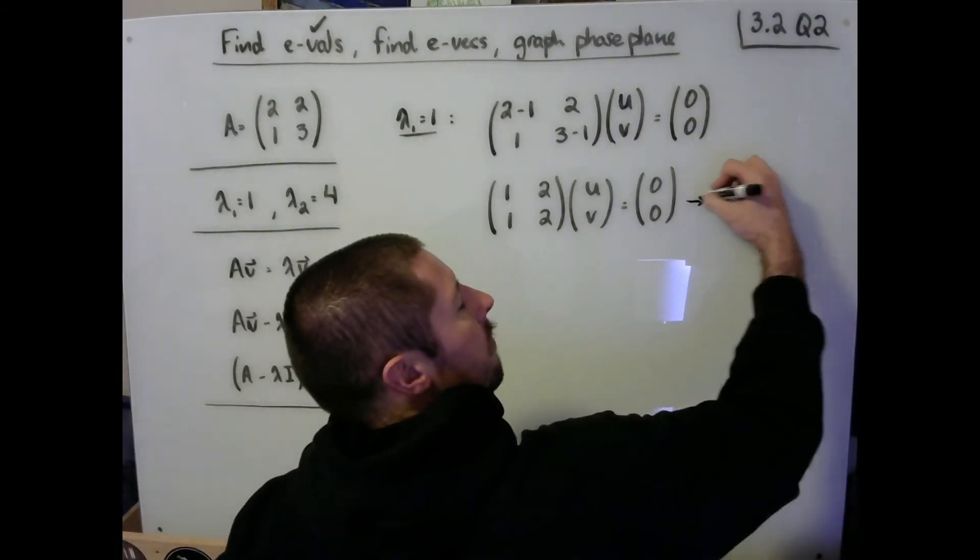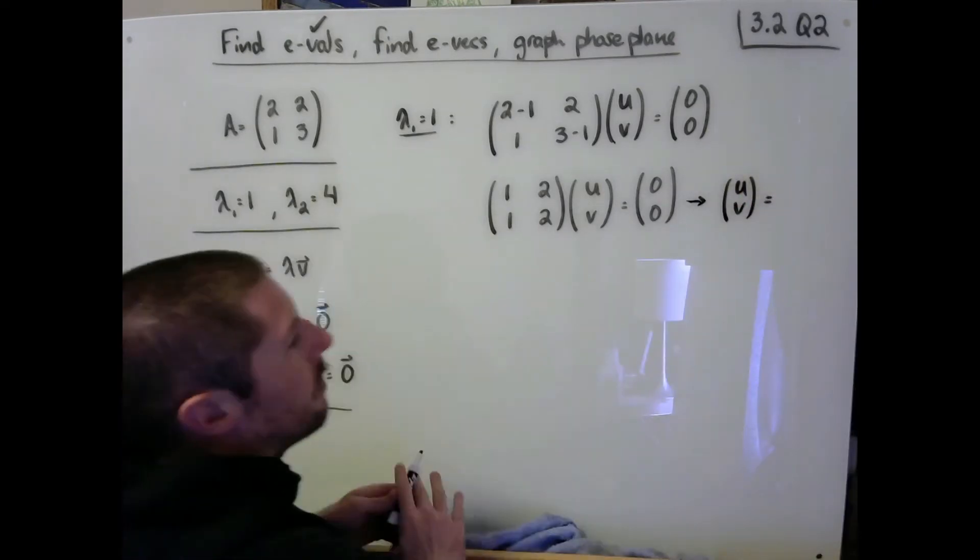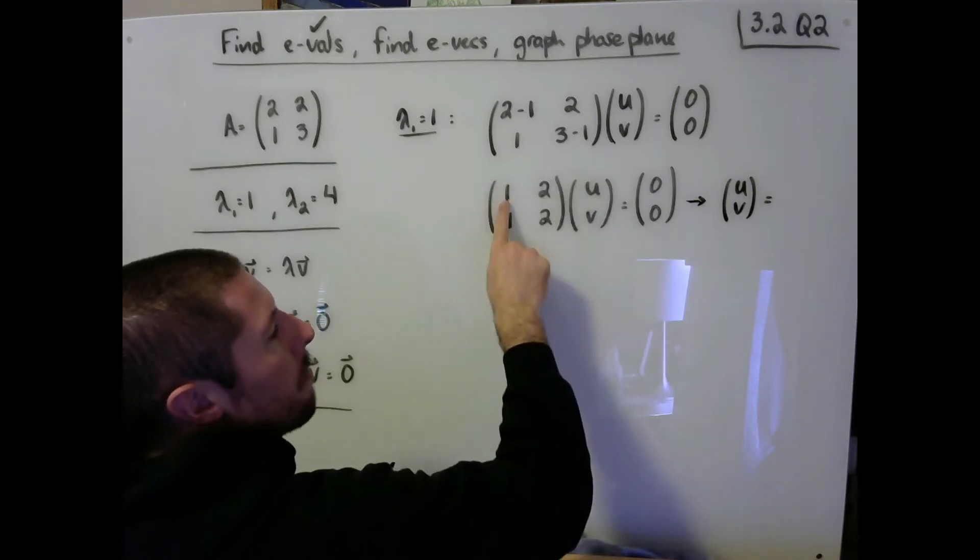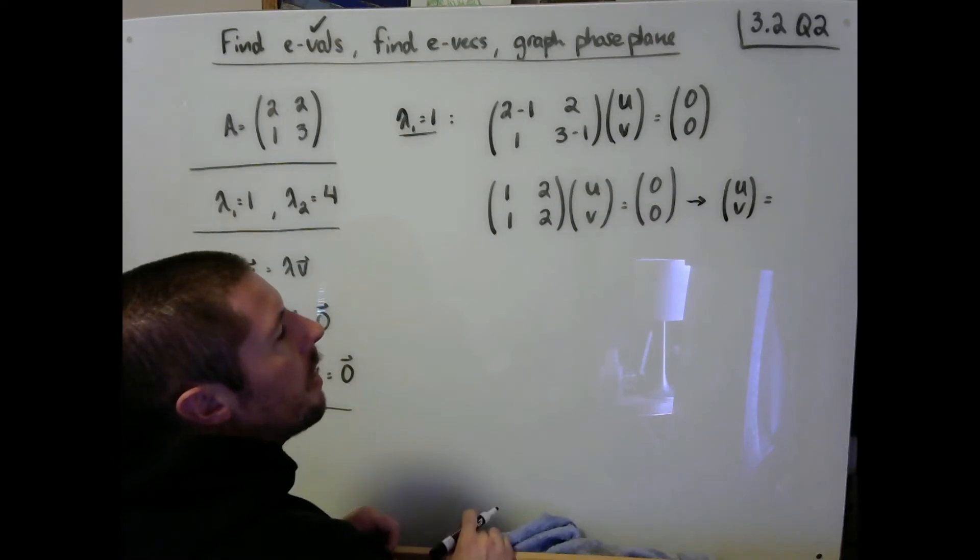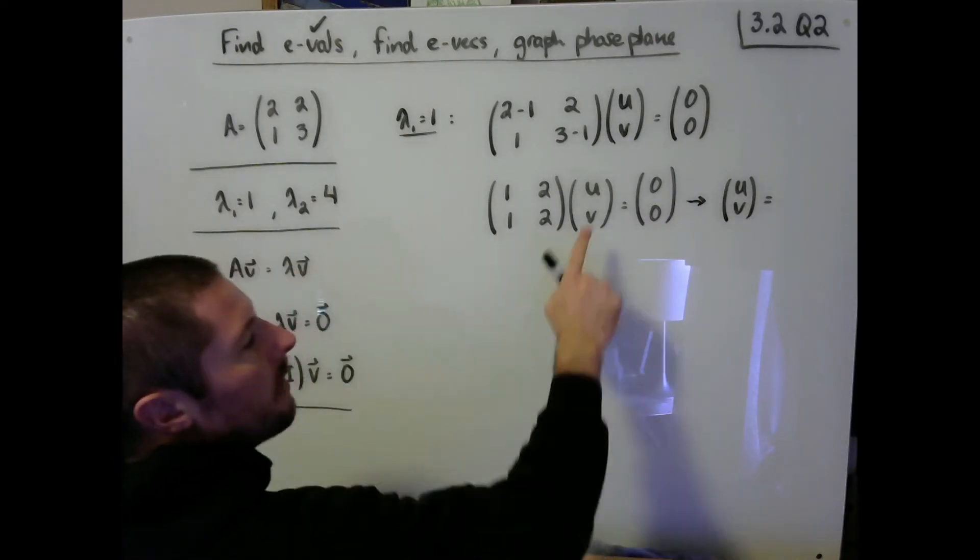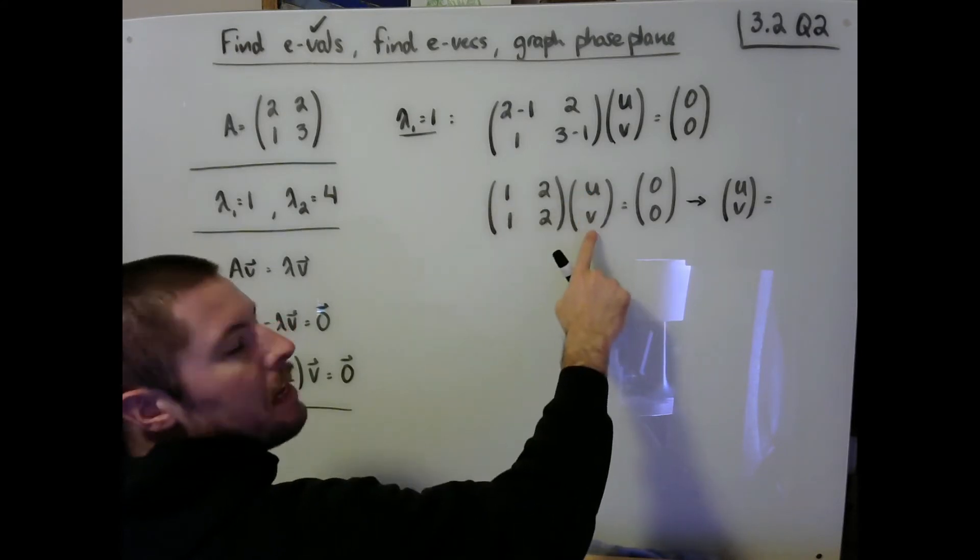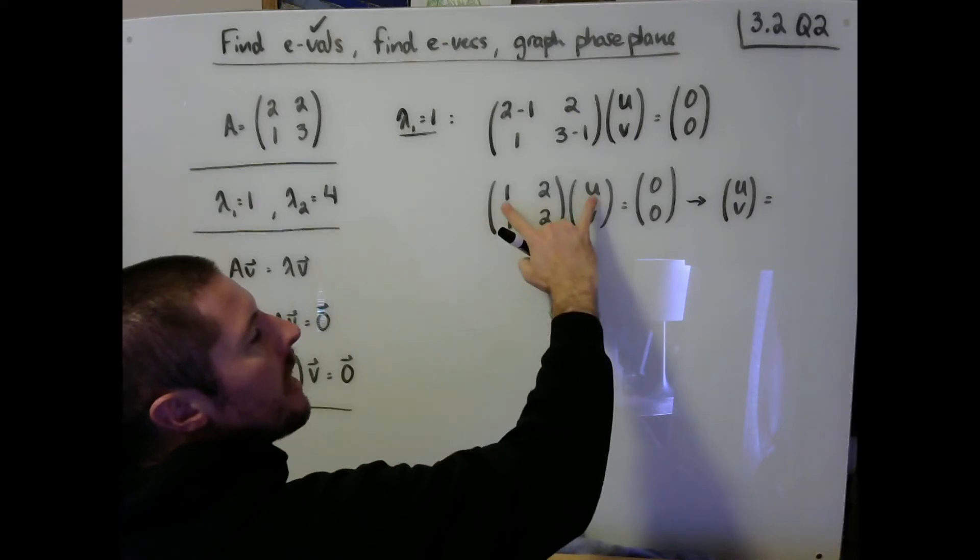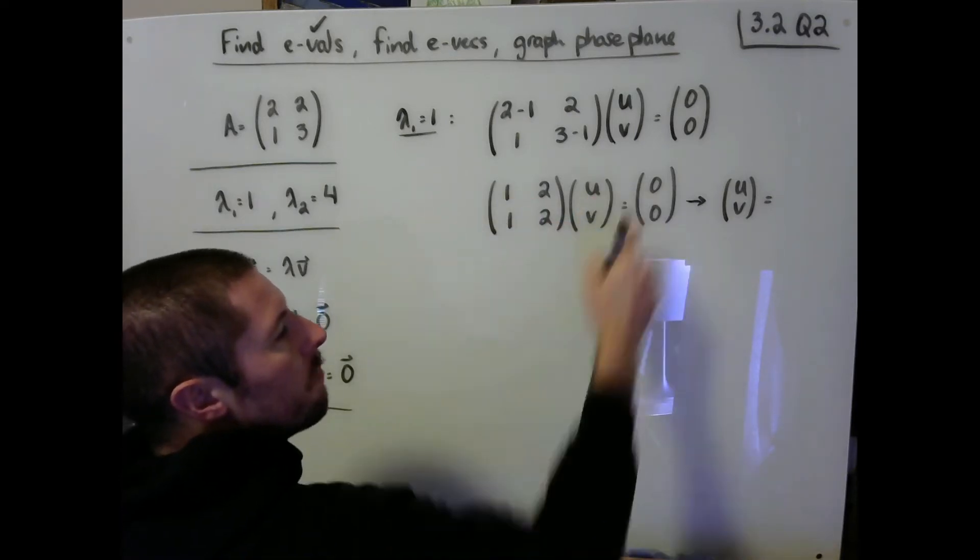So here what I'm thinking to myself, what value of u, v makes sense? Well, I'm seeing here with a little bit of matrix multiplication, this looks to me like one copy of u plus two copies of v needs to be zero. I think in this case, if I let u be negative two and v be one, then we'll get a negative two and a positive two to cancel and give me zero.